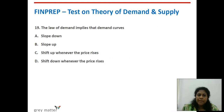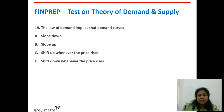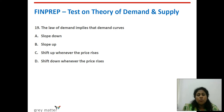Nineteenth question: the law of demand implies that demand curves do what? Options are slope down, slope up, shift up whenever price rises, or shift down whenever price rises. The law of demand is associated with a downward-sloping curve. So it is option A — slope down.